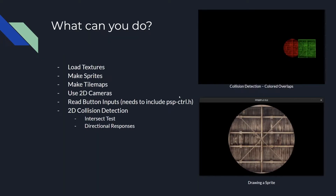That was a quick example. Other things it can do: it loads textures, you can make sprites, and you can make tile maps — which are basically larger maps of sprites. You can also use 2D cameras and tie them to button inputs, which are also supported via the PSP control header. There is also 2D collision detection in two forms: the intersection test, which shows overlapping objects painted in different colors, and the directional response, which depends on which direction an object collides with another — for example, the left side of the red object or the right side of the green object, depending on which one was moving.